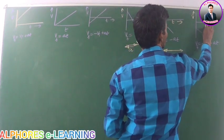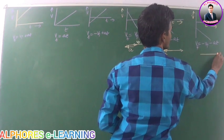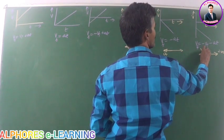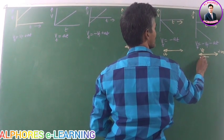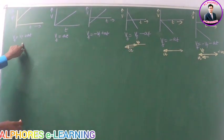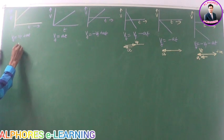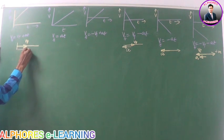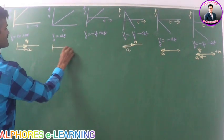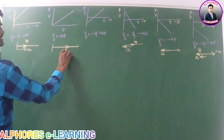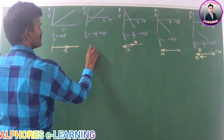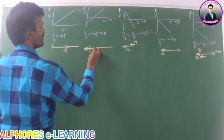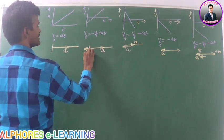Similarly, if velocity and acceleration are in the positive direction, this is initial velocity and this is acceleration, then the graph is like this. In this case velocity and acceleration are both in the same direction. Here, if acceleration is in the negative direction while velocity is acting on the negative side but acceleration is acting on the positive side, then in such a case the graph is like this.